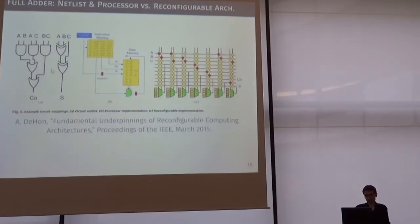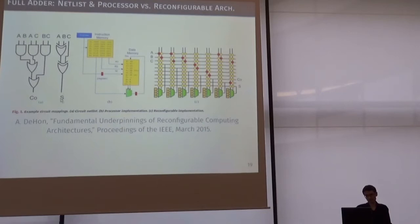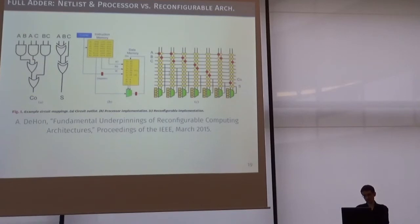How does it look in practice? Say you would like to have an adder of your own — it's going to be a full adder, so it takes number A, number B, and carry-in, and produces the sum of those numbers and carry-out. On a CPU, you would have a processor fetching one instruction after another from instruction memory, operating on the data memory cell by cell, in a sequence. On an FPGA, you don't have any instructions or interpretation going on — you can directly lay out the hardware that corresponds to the implementation you would like to have.